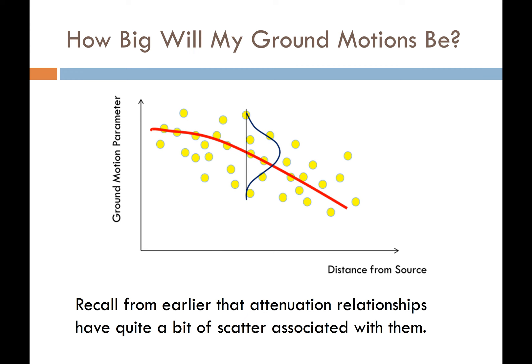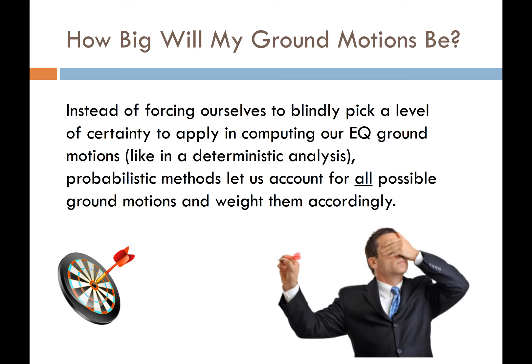That wraps up uncertainty in earthquake magnitude. Now let's talk about the third source of uncertainty: even if we knew the magnitude and the location of an earthquake, we still don't know how big the ground motion will be at our actual site. This relates to the scatter and uncertainty in recorded ground motions. We could blindly pick a level of certainty like the 84th or 50th percentile as in a deterministic analysis, but probabilistic methods let us account for all possible ground motions weighted by their likelihoods of being exceeded.